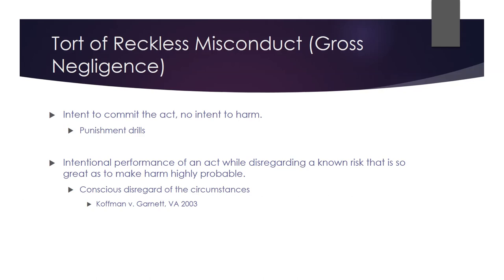On to reckless misconduct or gross negligence — this one's shorter. The specific wording is the intentional performance of an act while disregarding a known risk that is so great as to make harm highly probable. Another way to think about it is conscious disregard of the circumstances. In the case Coffman v. Garnett, the plaintiff Andy Coffman was 13 years old and the defendant James Garnett was a football coach at Andy's middle school. In the fall of 2000, it was the second week of football season. Andy was a first-year player in eighth grade, a third-string defensive player. Garnett was the defensive coach.